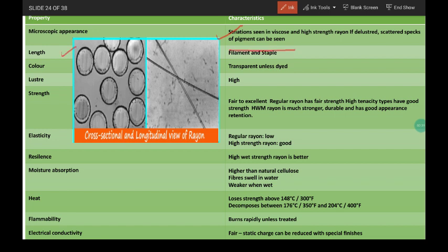Its length can vary. It may be a staple fiber or filament fiber because it is man-made fiber, so it can be controlled. Its color is transparent unless dyed. It has high luster. That's why it is called artificial silk. You have to remember that this is an artificial silk fiber.